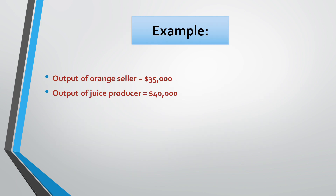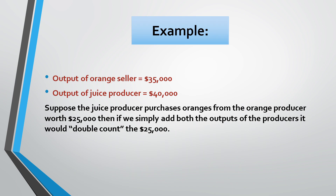Now look at some examples. The output of the orange seller is given as $35,000 and the output of the juice producer is given as $40,000. Now suppose the juice producer purchases oranges from the orange producer worth $25,000. Then if we simply add both the outputs of the producers, it would double count the $25,000. The problem of double counting arises because of conceptual and practical problems in determining whether a product is final or intermediate. For example, orange is a final product for the orange producer but an input for the juice producer.